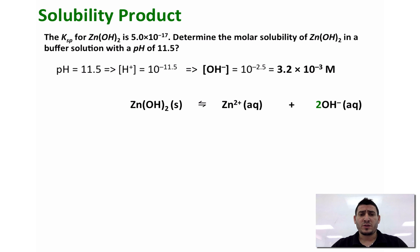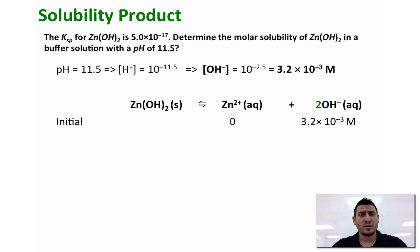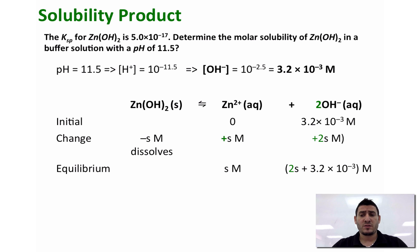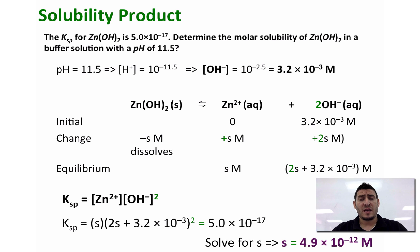Looking at the ICE table: at the initial state we have zero Zn²⁺ before any dissolution of zinc hydroxide, but from the buffer solution we have 3.2 × 10⁻³ molar of OH⁻. After s molar of zinc hydroxide dissolves, we form s molar of Zn²⁺ and 2s molar of OH⁻. At equilibrium we have s molar of Zn²⁺ and (2s + 3.2 × 10⁻³) molar of OH⁻. Replacing these into the Ksp expression, we get s = 4.9 × 10⁻¹² molar.